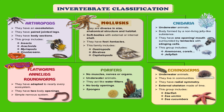Mollusks are a diverse group. They have soft bodies and foot or tentacles. This includes gastropods, cephalopods, and bivalves. The cnidarian group is usually found underwater. The body is formed from a non-living jelly-like substance. They have one opening, and this includes anemones, corals, and jellyfish.